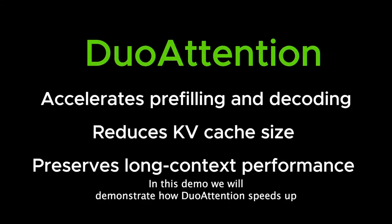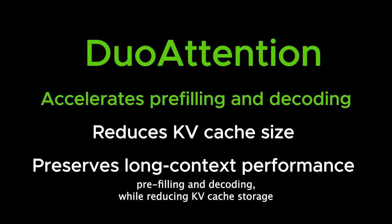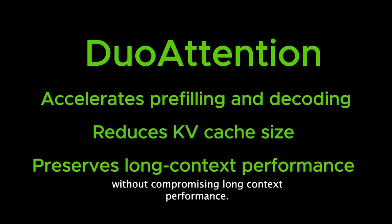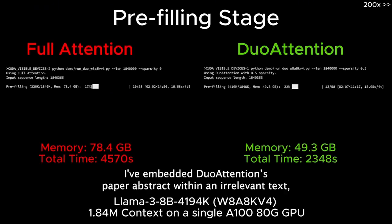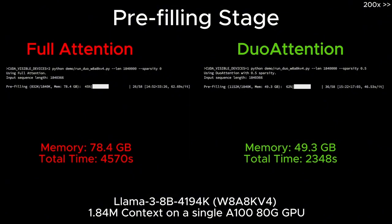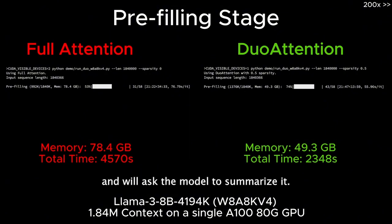In this demo, we'll demonstrate how Duo Attention speeds up prefilling and decoding while reducing KV Cache storage without compromising long context performance. I've embedded the Duo Attention paper abstract within irrelevant text and will ask the model to summarize it.